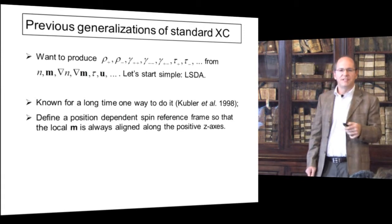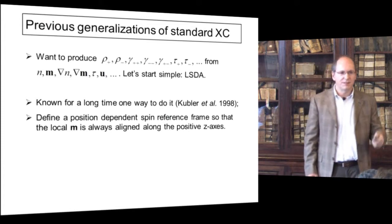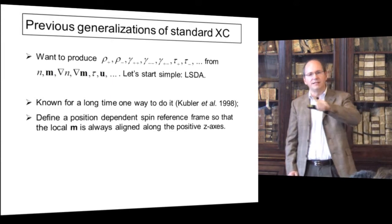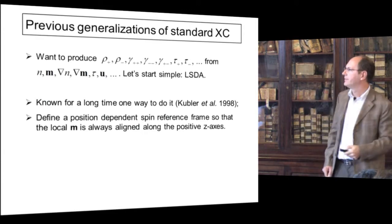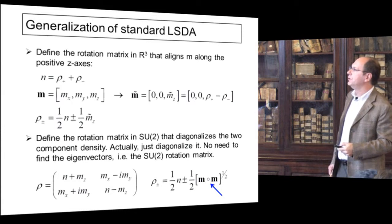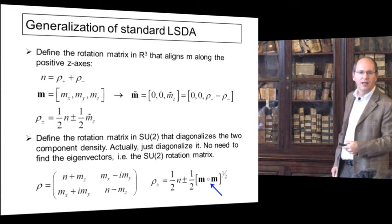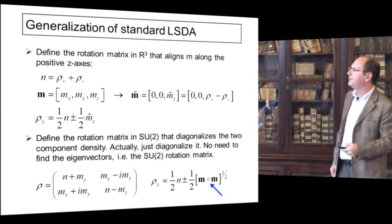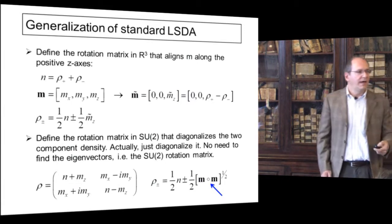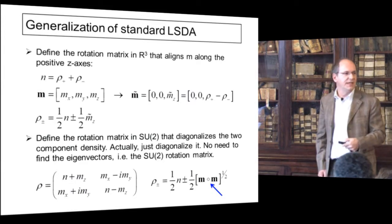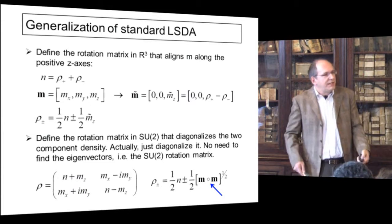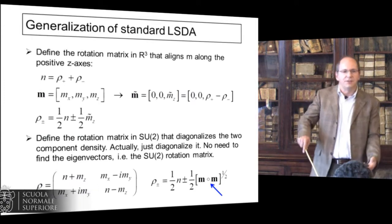If you do that, you basically turn your magnetization vector — locally, point by point, using a different reference frame — into a scalar. You define your plus and minus densities accordingly. To do this you formally need a rotation in R³, or equivalently in SU(2). If you start from the density matrix written in the right form, you don't even need the rotation: you just diagonalize the matrix. You don't need the eigenvectors to compute the energy, just the eigenvalues. That removes one numerical issue of defining the rotation matrix.